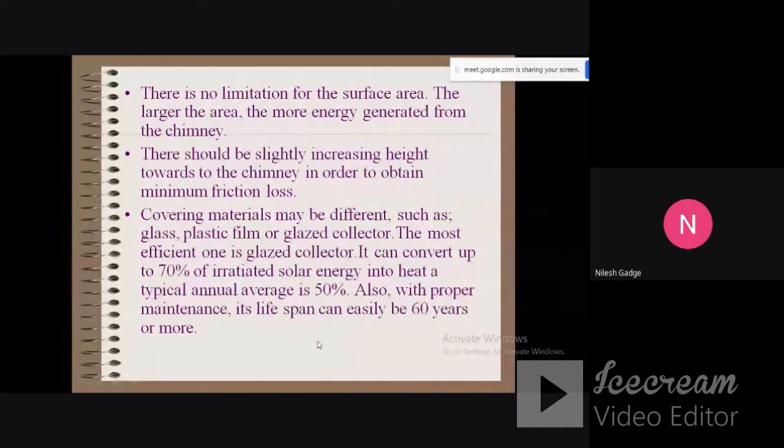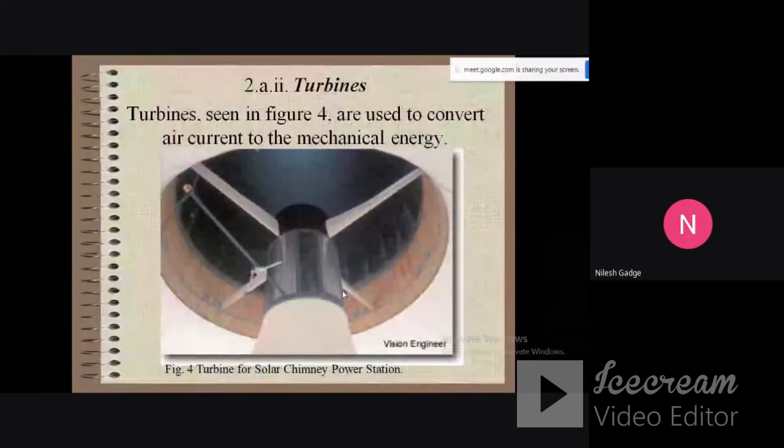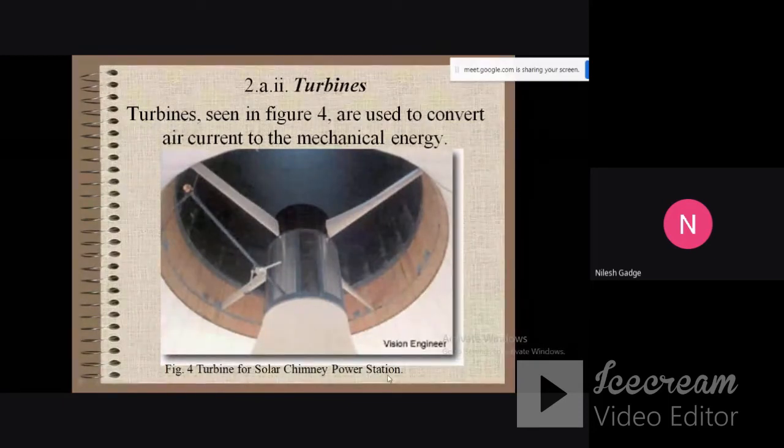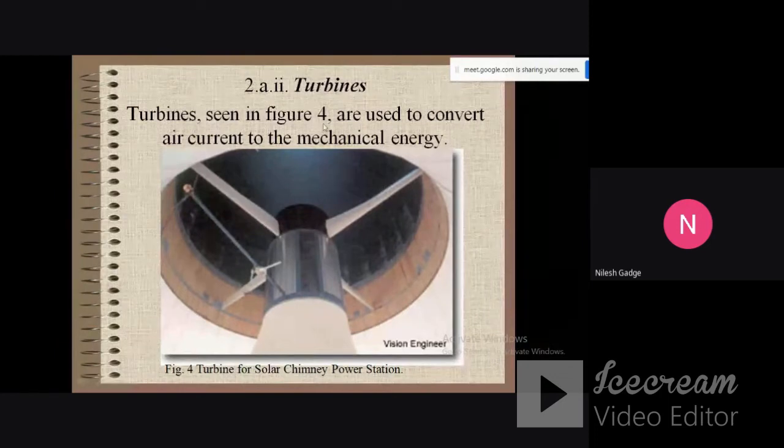This is the structure of the turbine which is used in the solar chimney. Turbines for solar chimney power stations, shown in this figure, are used to convert air current into mechanical energy.